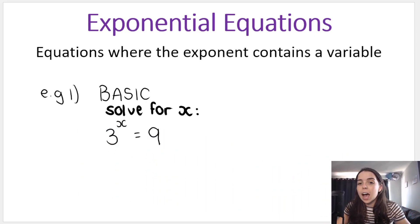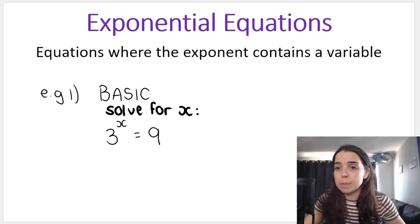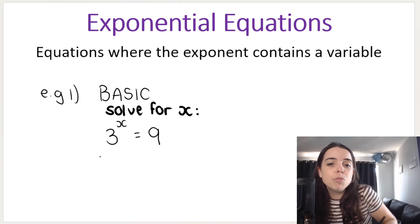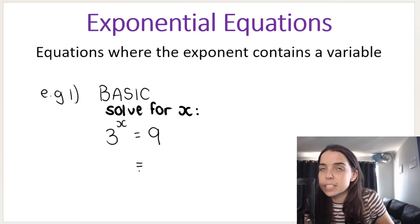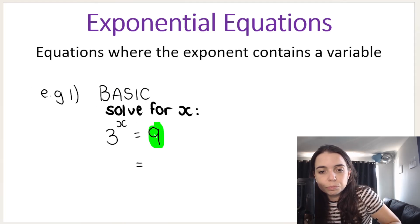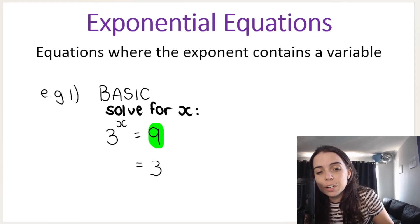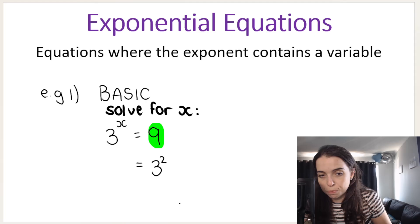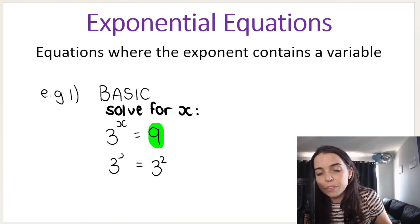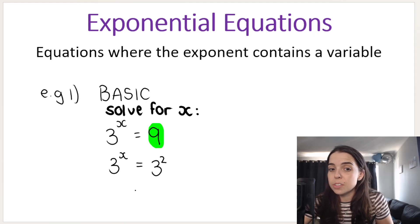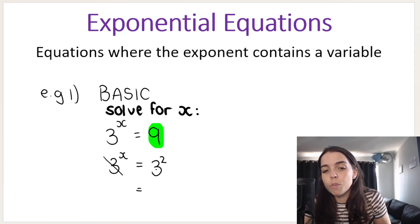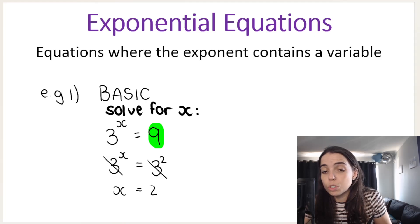How we approach a question like this — this is a very basic and simple one — our rule is to get the bases the same. So instead of nine, I'm going to rewrite it as three to the power of two. This side we keep as three to the power of x. Then once the bases are the same, we are allowed to drop the base, and then x is equal to two.